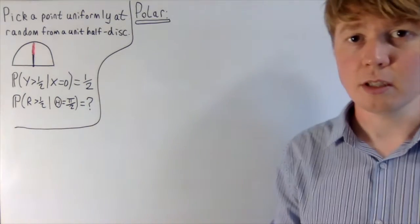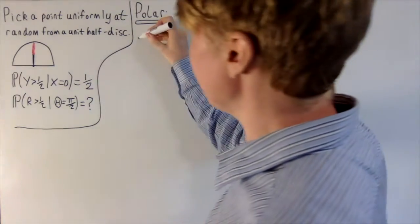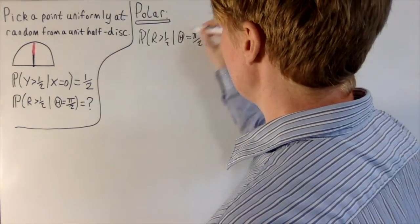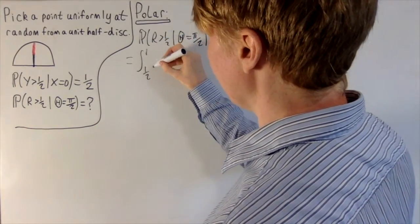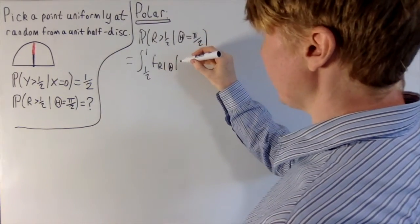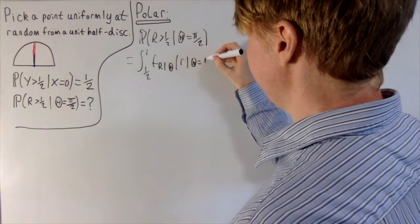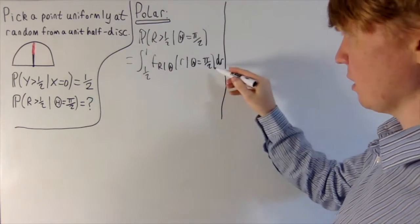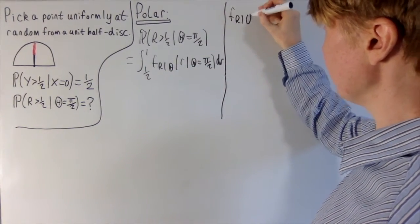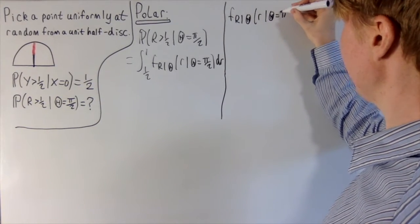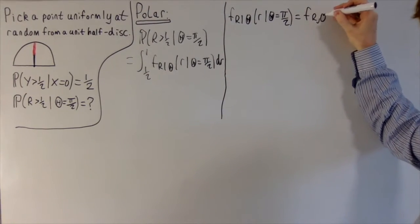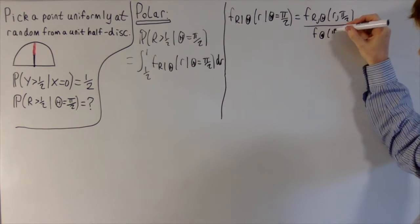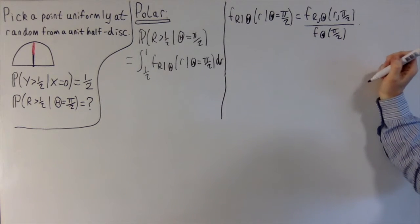Now let's calculate the same conditional probability using polar coordinates, taking exactly the same approach as before. We write the probability as an integral using the conditional PDF: the integral where r goes between one half and one of the conditional PDF for r given theta equals pi over two, with respect to r. We're in the same position as before — we need to work out what this conditional PDF equals.